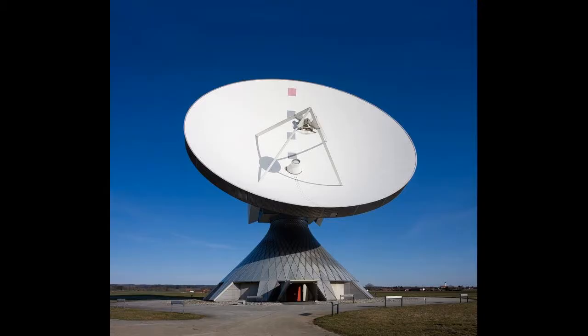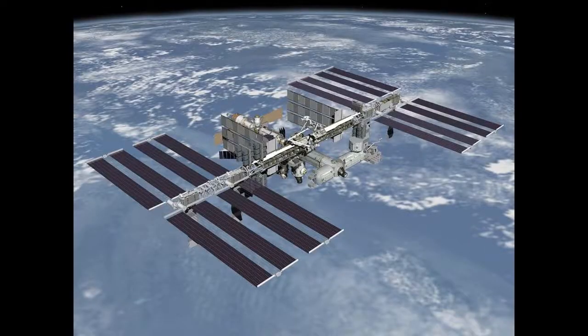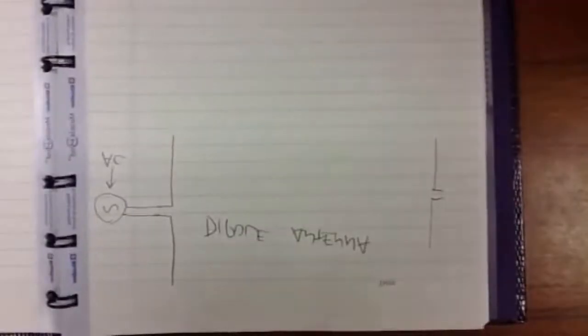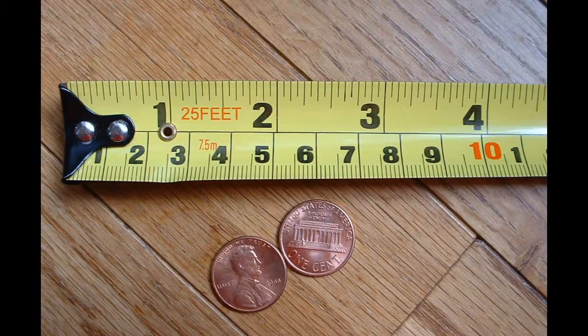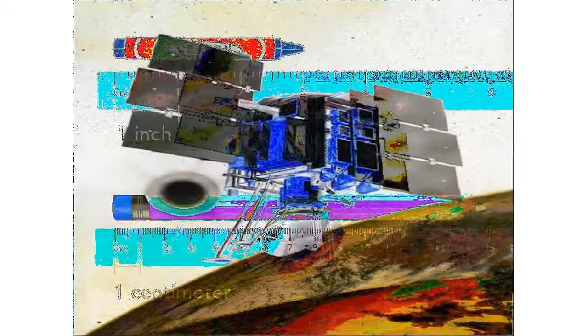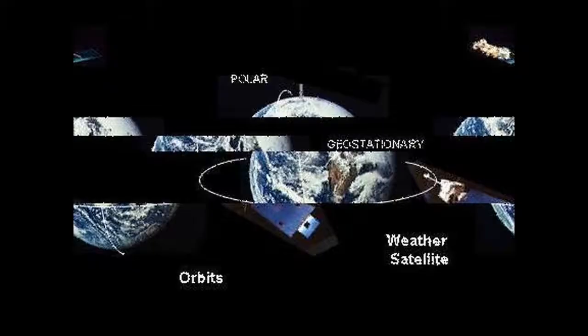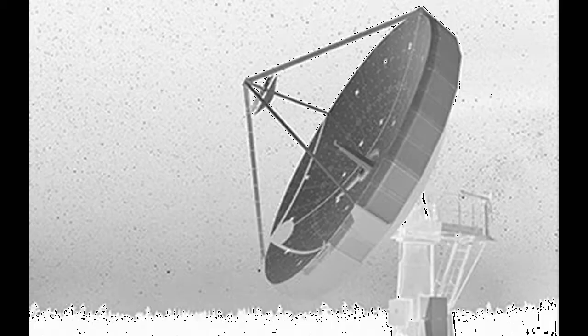In addition to measuring surface winds over the ocean, scatterometers such as QuikSCAT can also provide information on the fractional coverage of sea ice, track large icebergs, differentiate types of ice and snow, and detect the freeze-thaw line in polar regions.